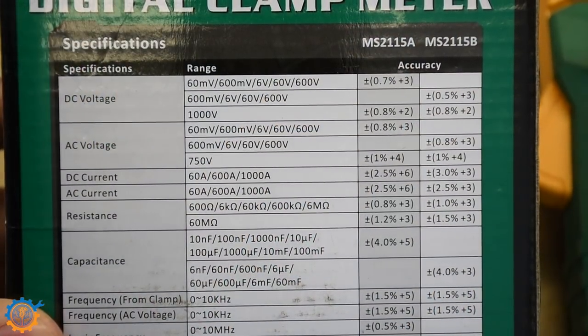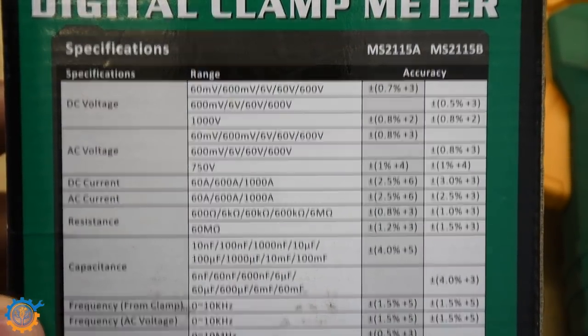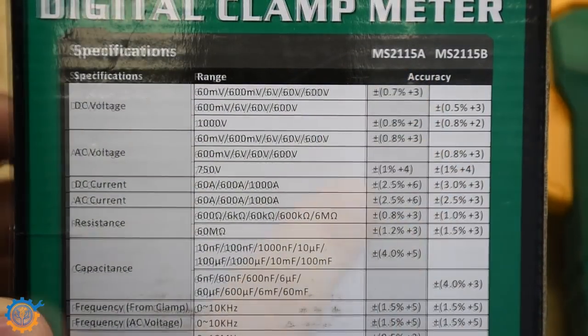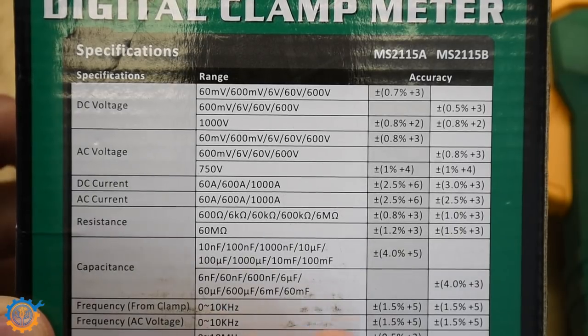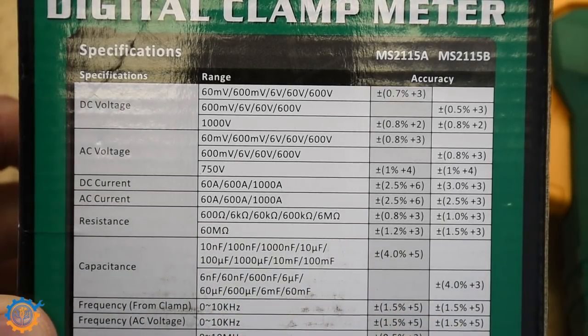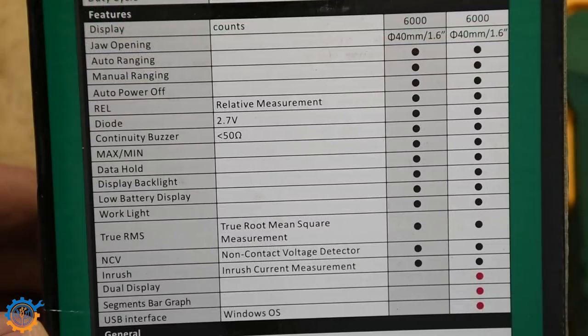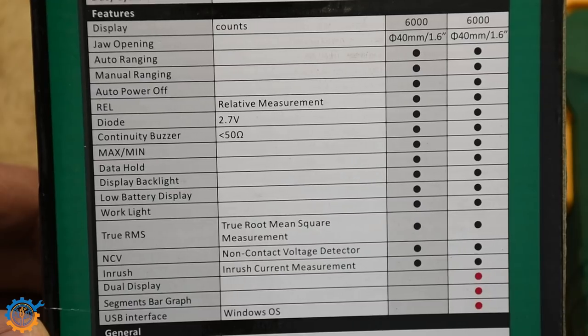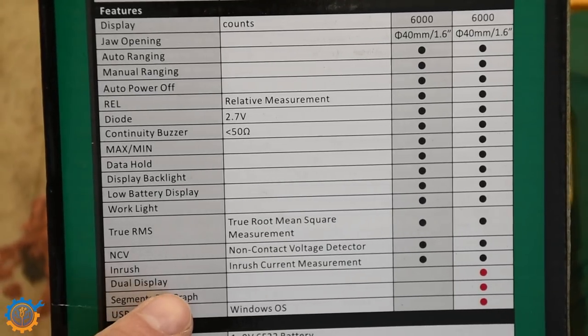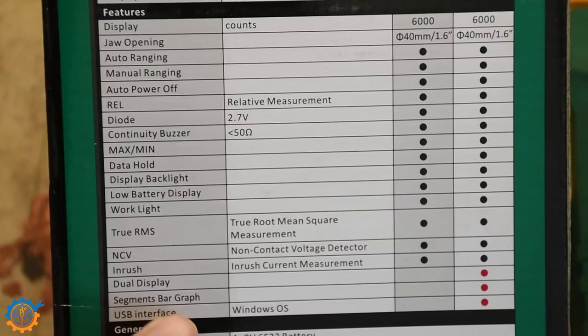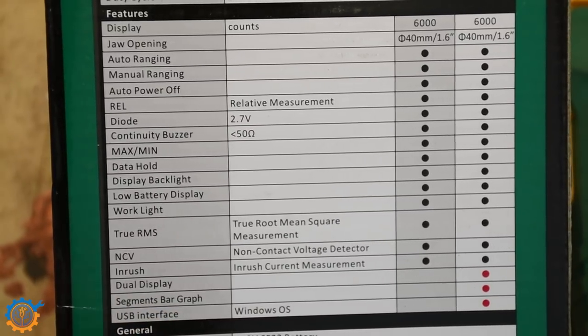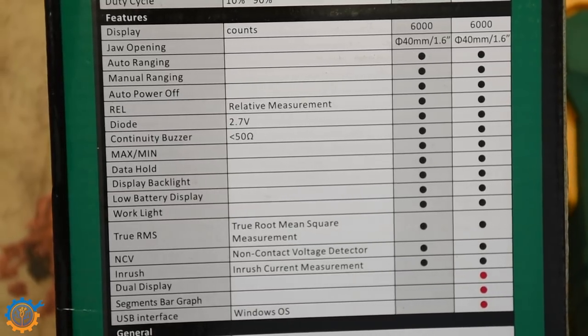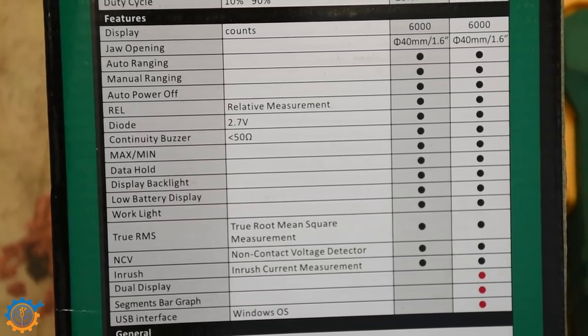So on the back side of this board you have most of the numbers for the unit. And you can see that there are two different versions. I am using the first version there. It has the same measurement settings, both of them. A little bit different but still the same. And I would say that I am happy with it so far. What's different between the B version and this version is that the B version has a dual display, the segments bar graph, and a USB interface. So that means that this one that I have actually doesn't have the USB interface. I did skip it because I did not see what I should do with it.